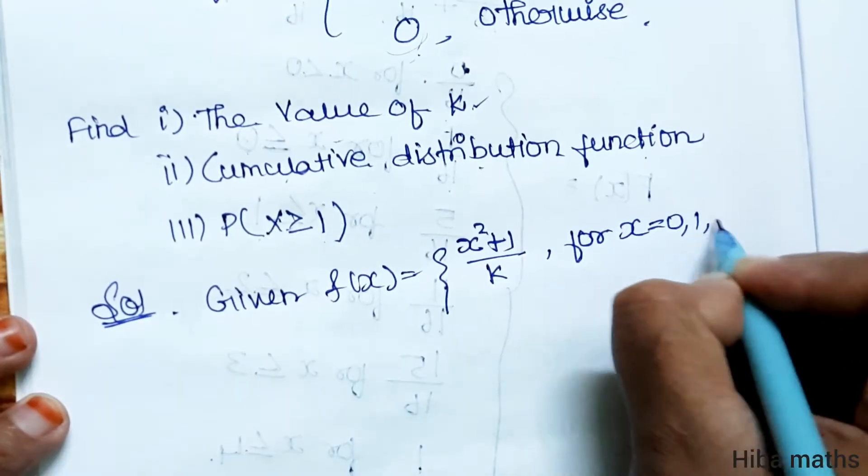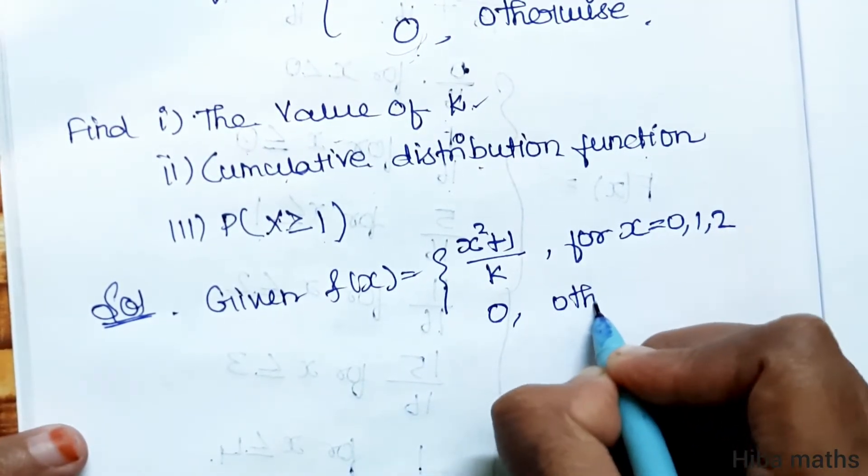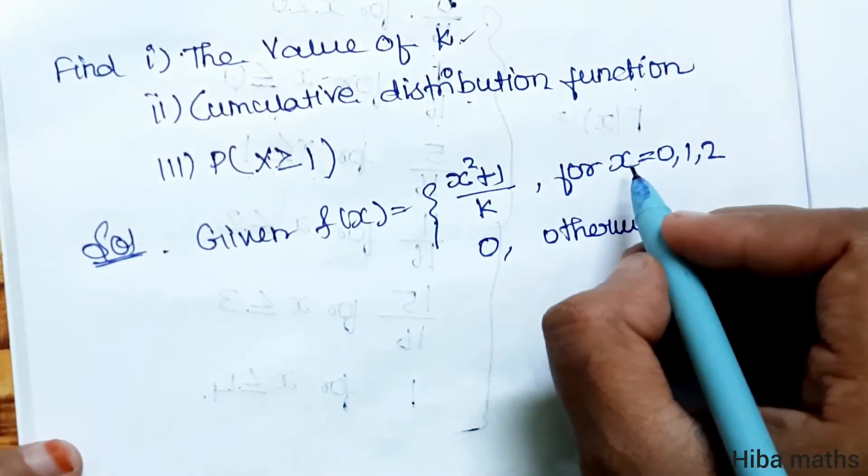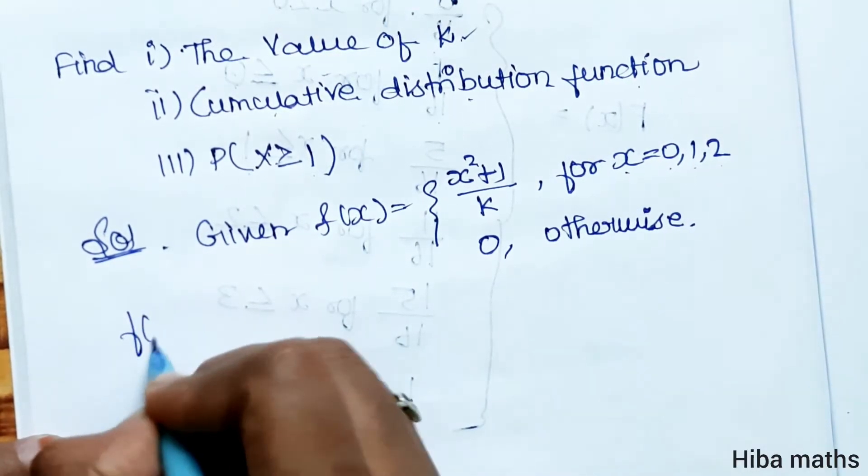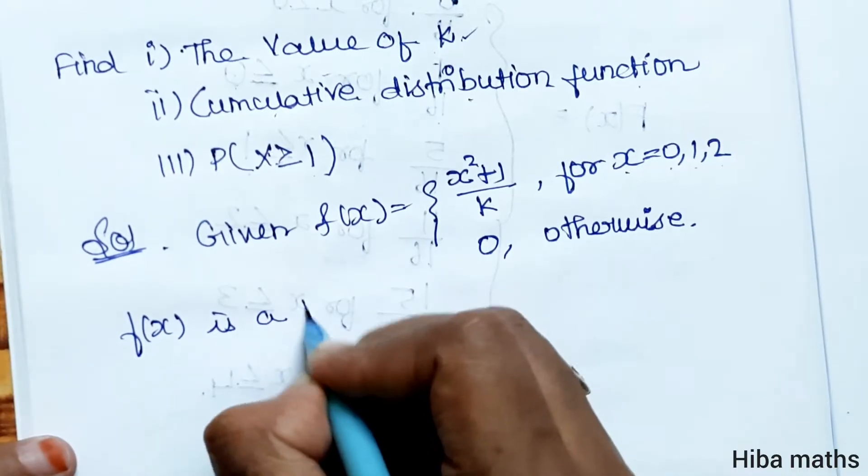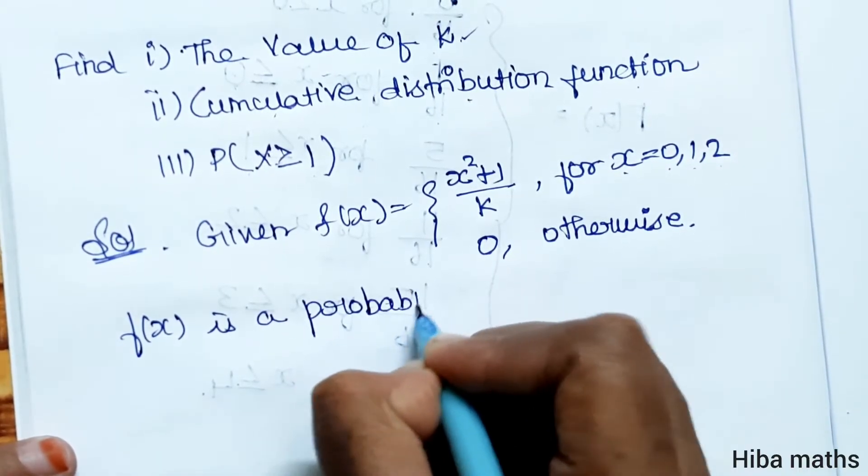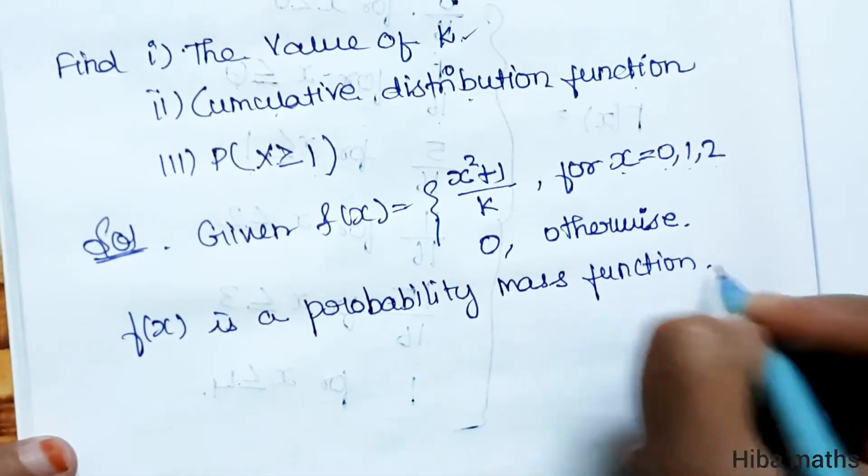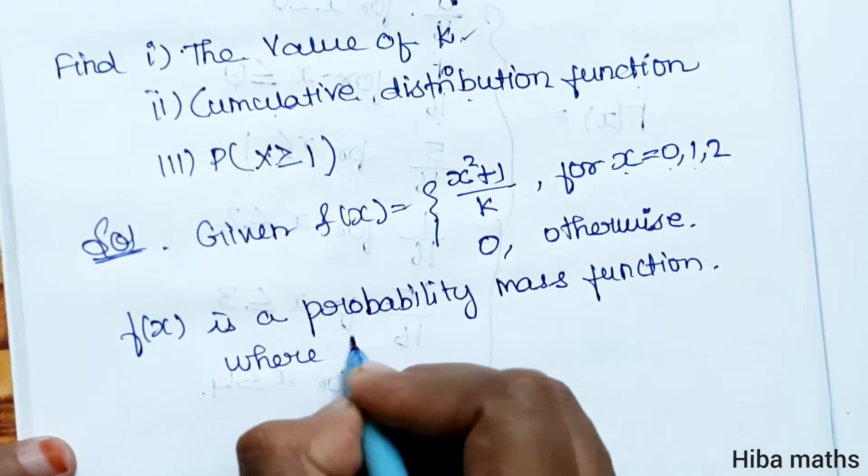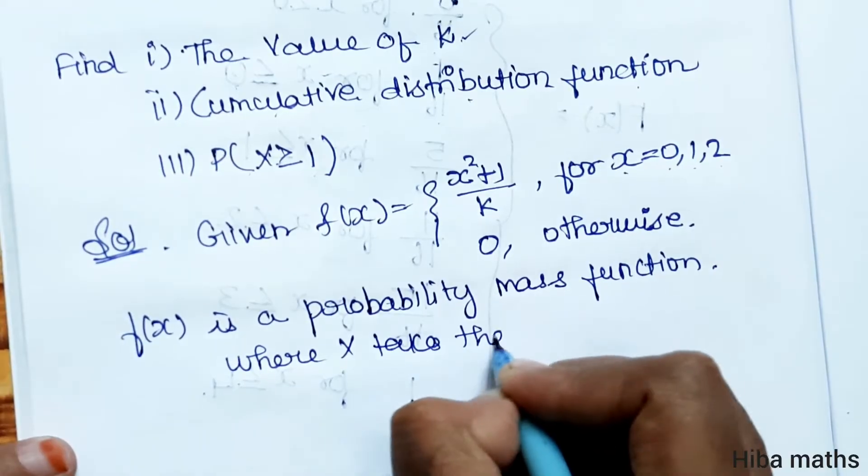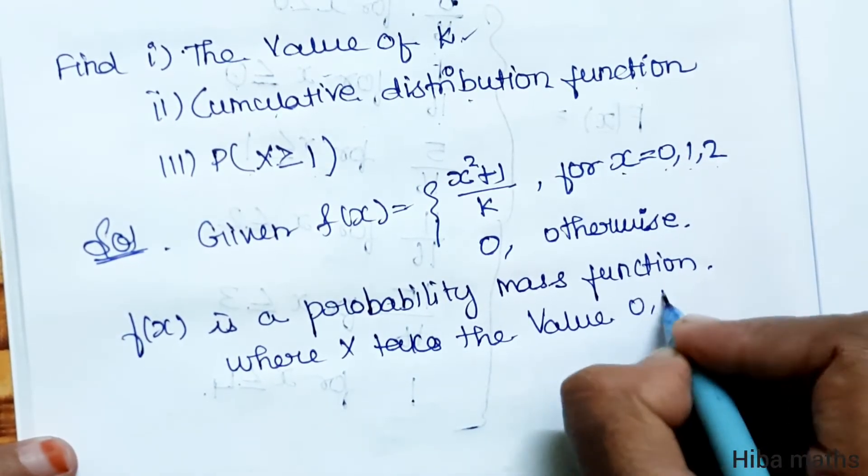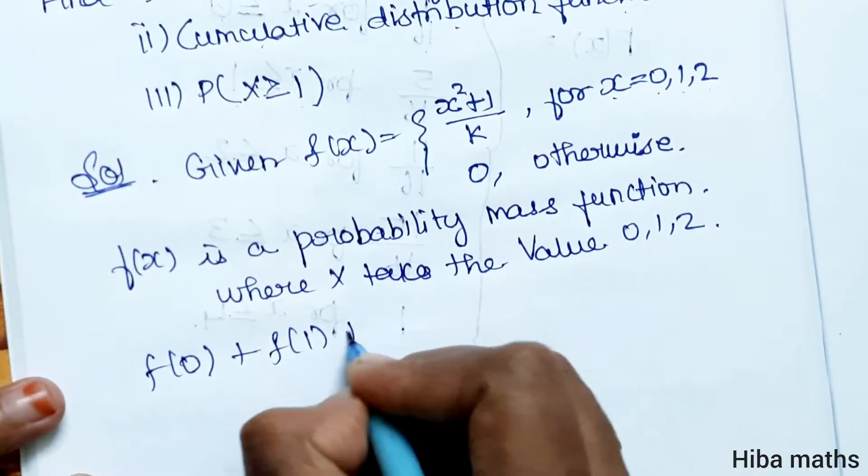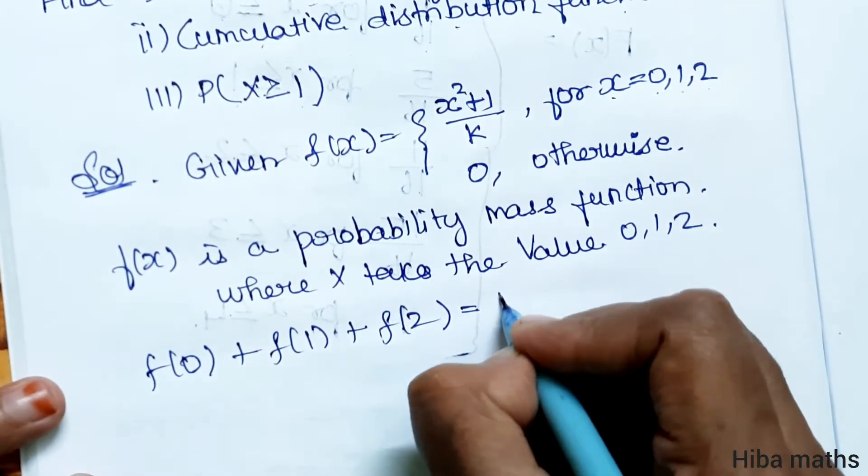For x equal to 0, 1, 2, if f(x) is the probability mass function where x takes the values 0, 1, 2, then f(0) plus f(1) plus f(2) equals 1.